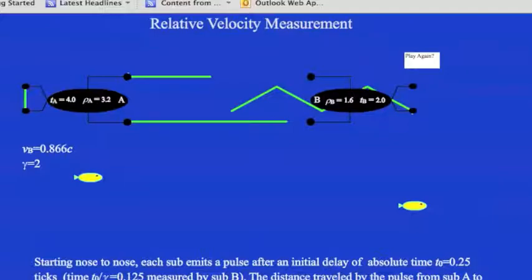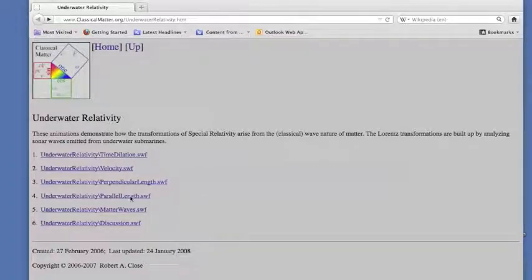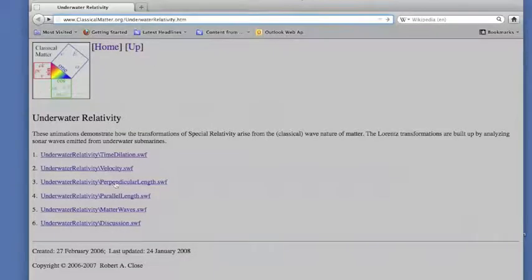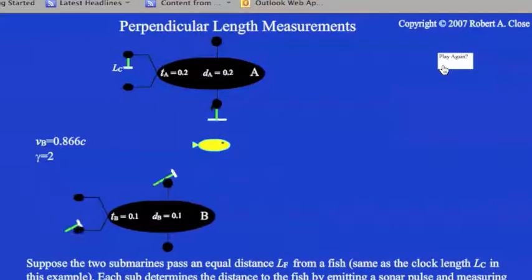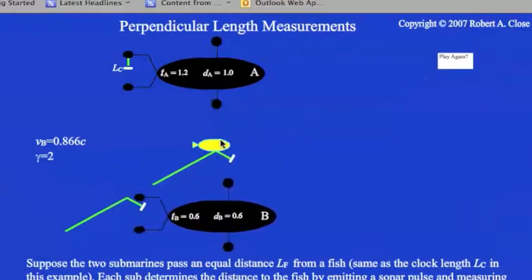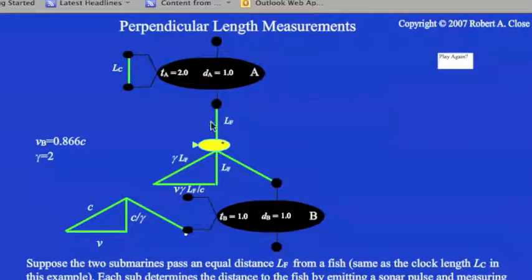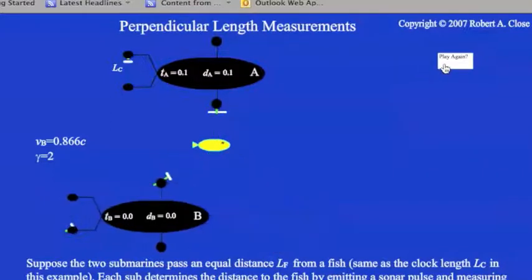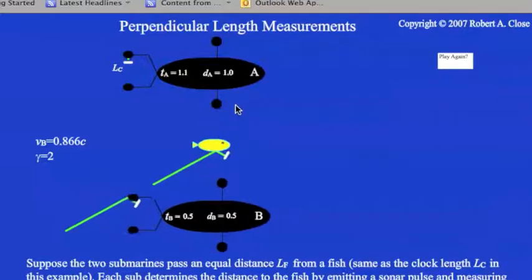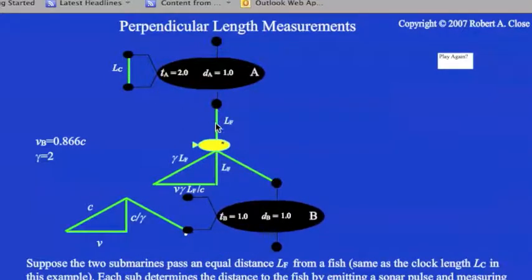Now let's go look at some length measurement. The first thing we'll look at is measurement of length perpendicular to the direction of motion. In this case, we have a fish located halfway between the two submarines. And you can see for the moving submarine here, if we play it, you'll see it's actually the same distance as the clock distance. And for the moving submarine, it's also the same distance as the clock distance.